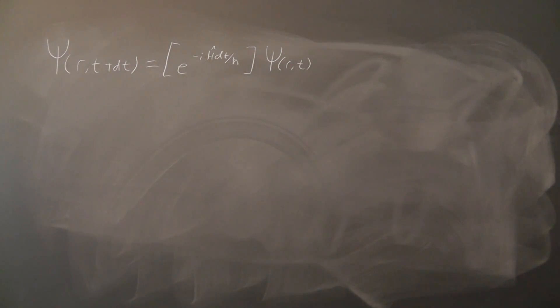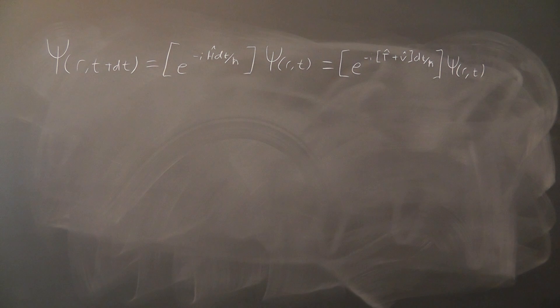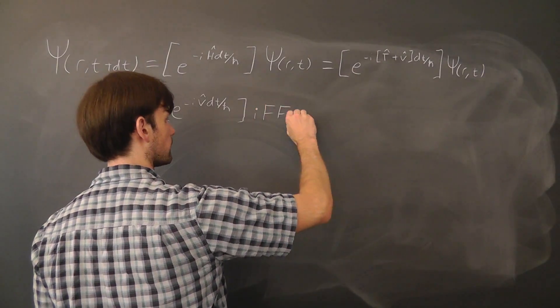Remember again that the i here means that the exponential is actually a bunch of sines and cosines. Here, we can simply split everything like so. However, as a note, in order to perform the multiplication with the momentum space operator, we first have to move the wave function into momentum space with a Fourier transform.